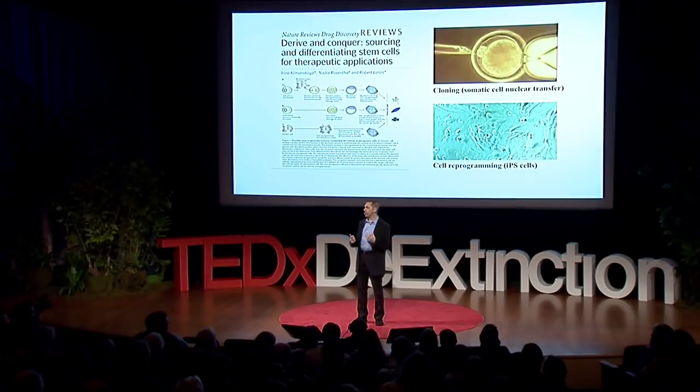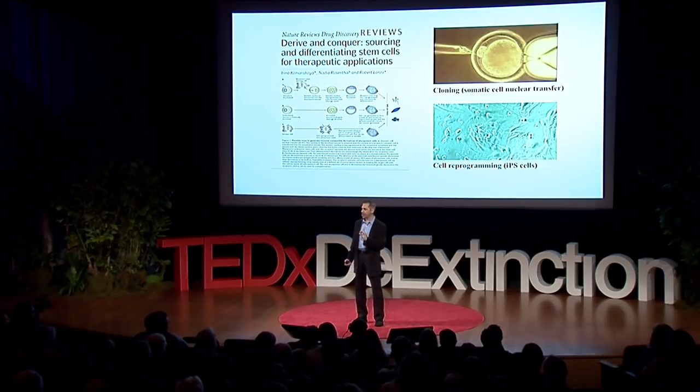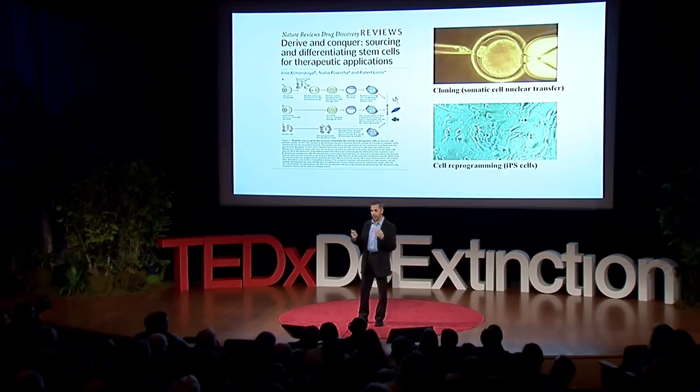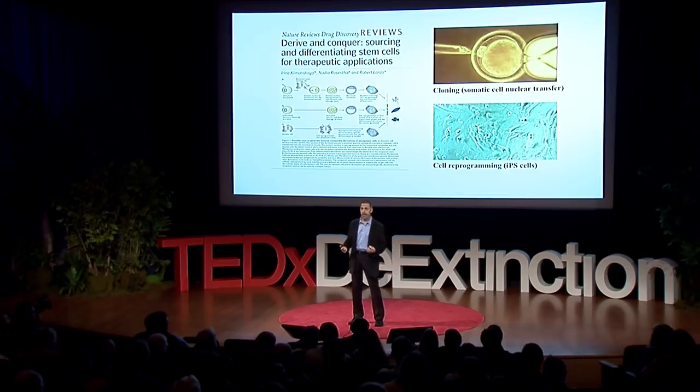Then you can do one of two things with that. You can place it in a Petri dish and turn it into embryonic stem cells, which are the master cells of the body and can turn into virtually every cell type. The other alternative is to place it into a surrogate animal to create an entire organism.